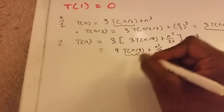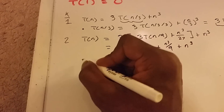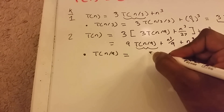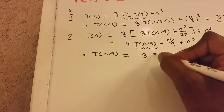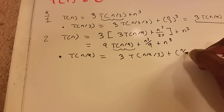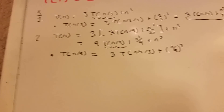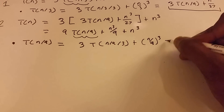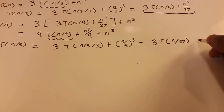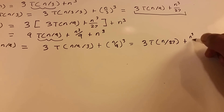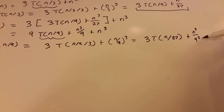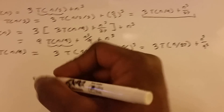Next up, we need to figure out what T of n divided by 9 is. T of n divided by 9 equals 3 times T of n divided by 9, divided by 3, plus n divided by 9, cubed. Simplifying, we get 3T of n divided by 27, plus n to the power of 3 divided by 9 to the power of 3 — and I'm going to leave it that way so I don't have to do hard multiplication right now.